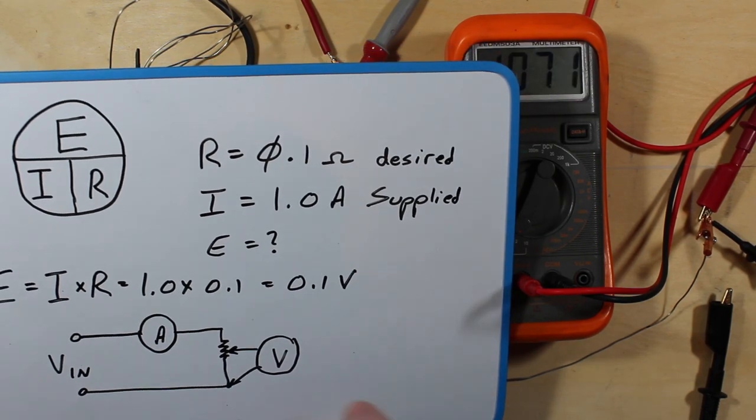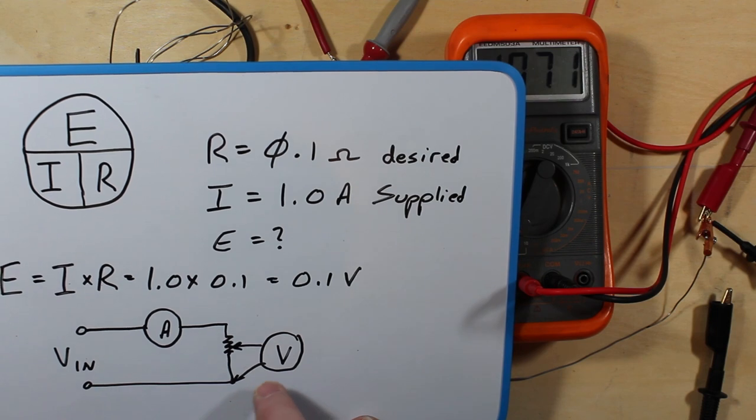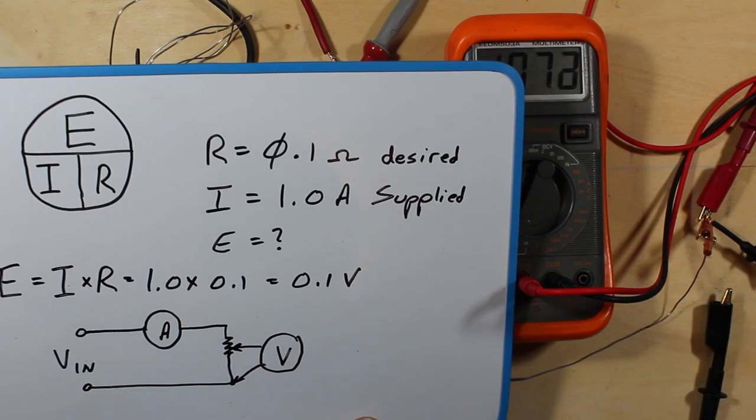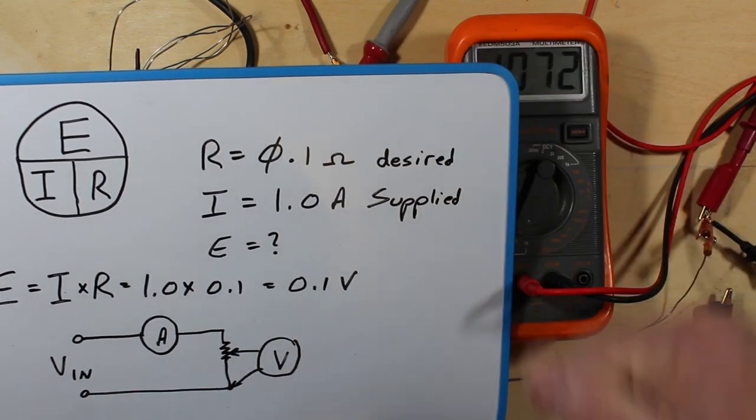So we're going to probe this wire with the multimeter, with the voltage meter. We know we've got 1 amp coming through here and we're going to be looking on here for 0.1 of a volt. And that will equate to 0.1 of an ohm.